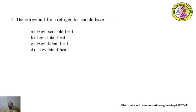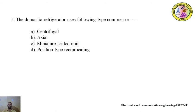Fourth question: the refrigerant for a refrigerator should have — options are: high sensible heat, high total heat, high latent heat, low latent heat. Answer: high latent heat. Fifth question: the domestic refrigerator uses which following type of compressor — centrifugal, axial, miniature sealed unit, positive type reciprocating. Answer: positive type reciprocating.